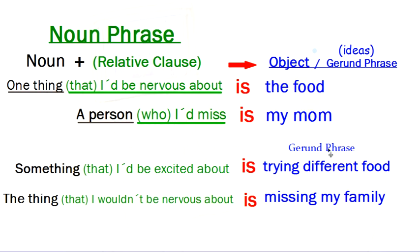So here's my gerund phrase. And it starts with the gerund, ing, right? So this is an idea. The idea of trying different food is my gerund phrase. And therefore, it's an object of the sentence. It's a noun, right? Or this one: The thing that I would be nervous about is missing my family. So again, here's my gerund, missing. And I'm using it as a gerund phrase to describe the idea of missing my family. Very good.